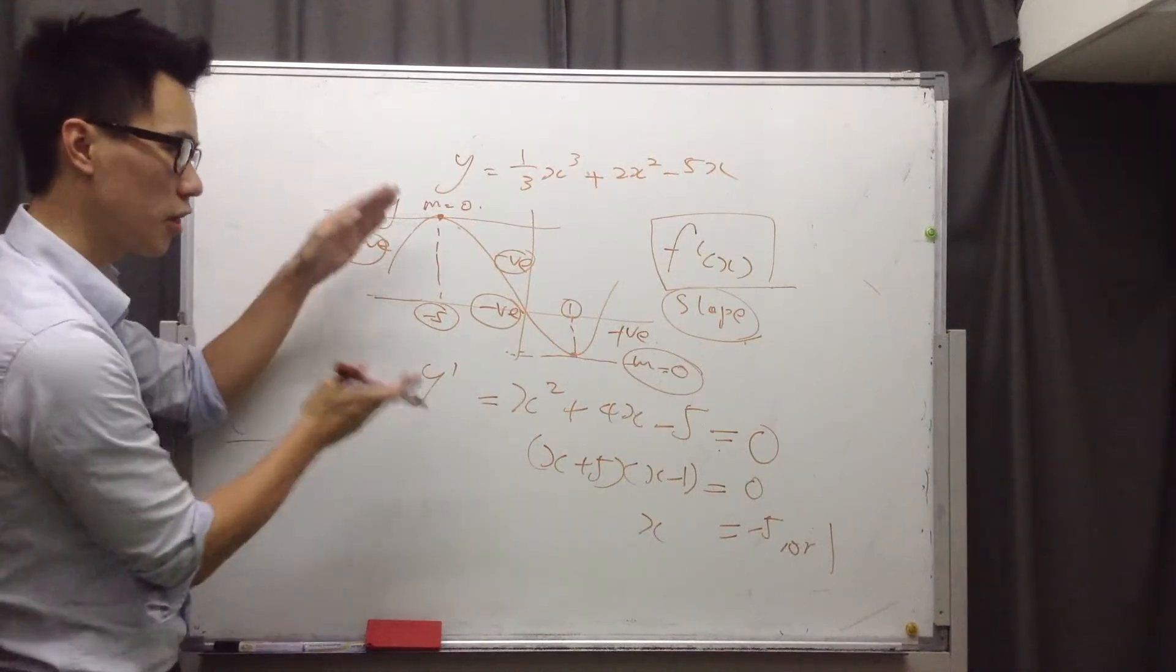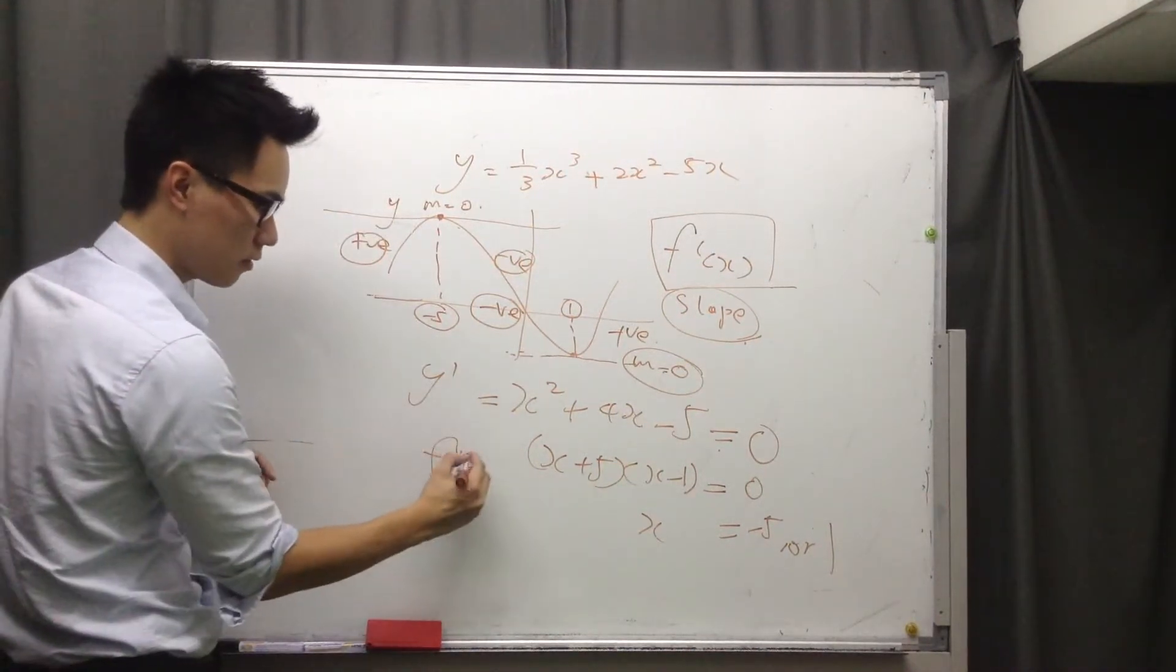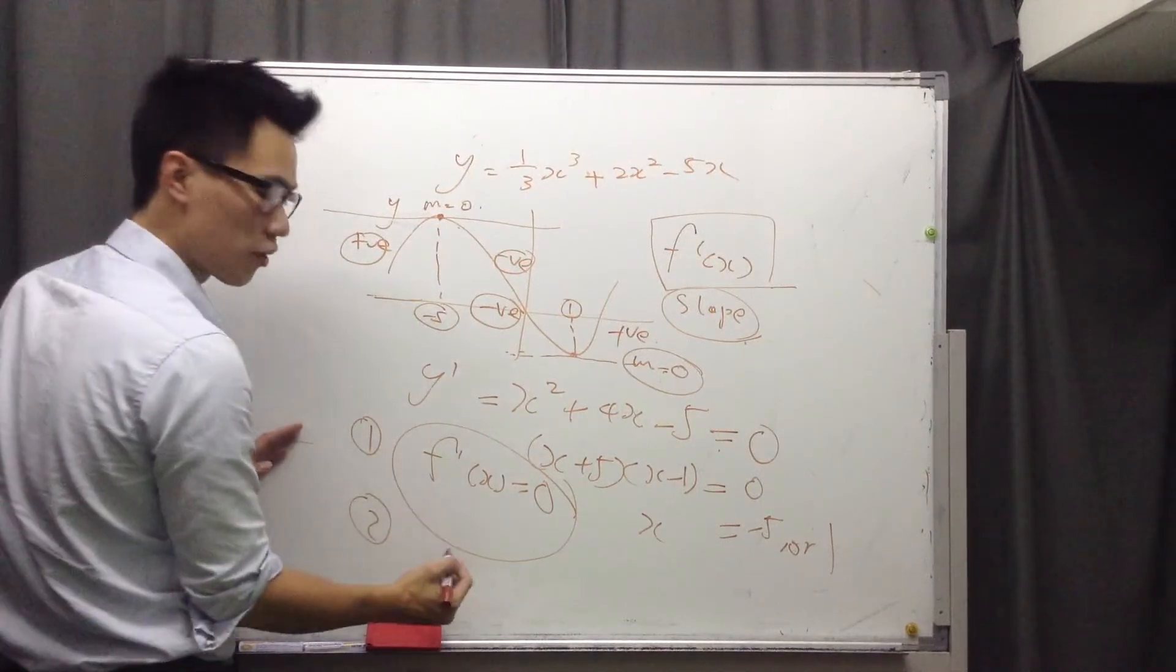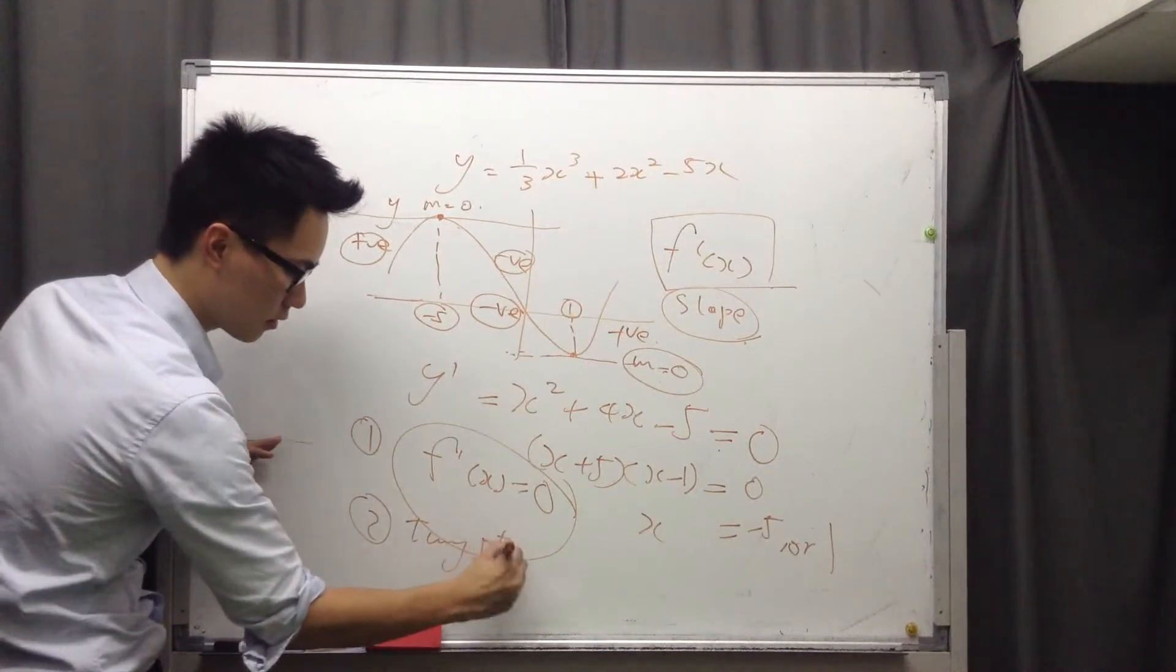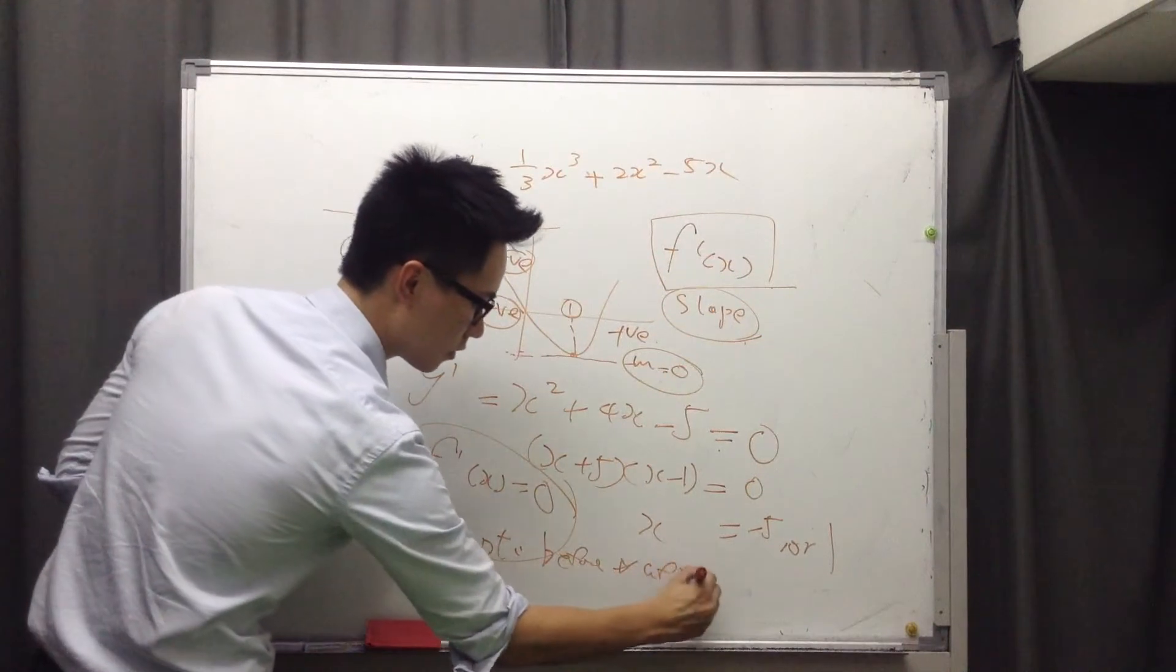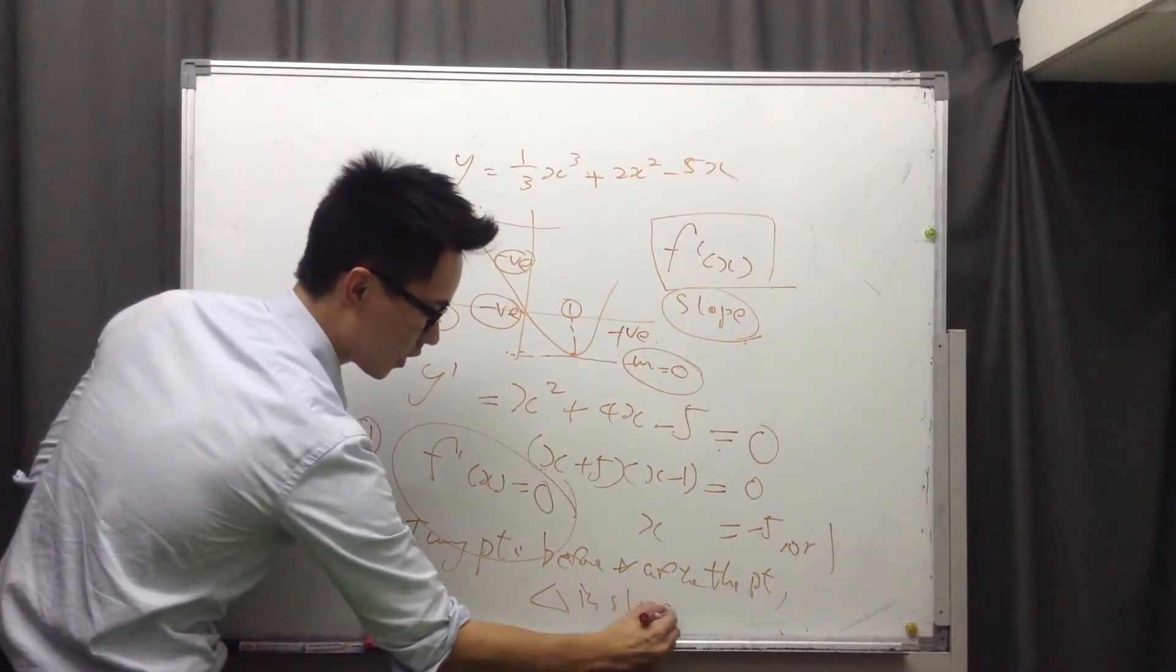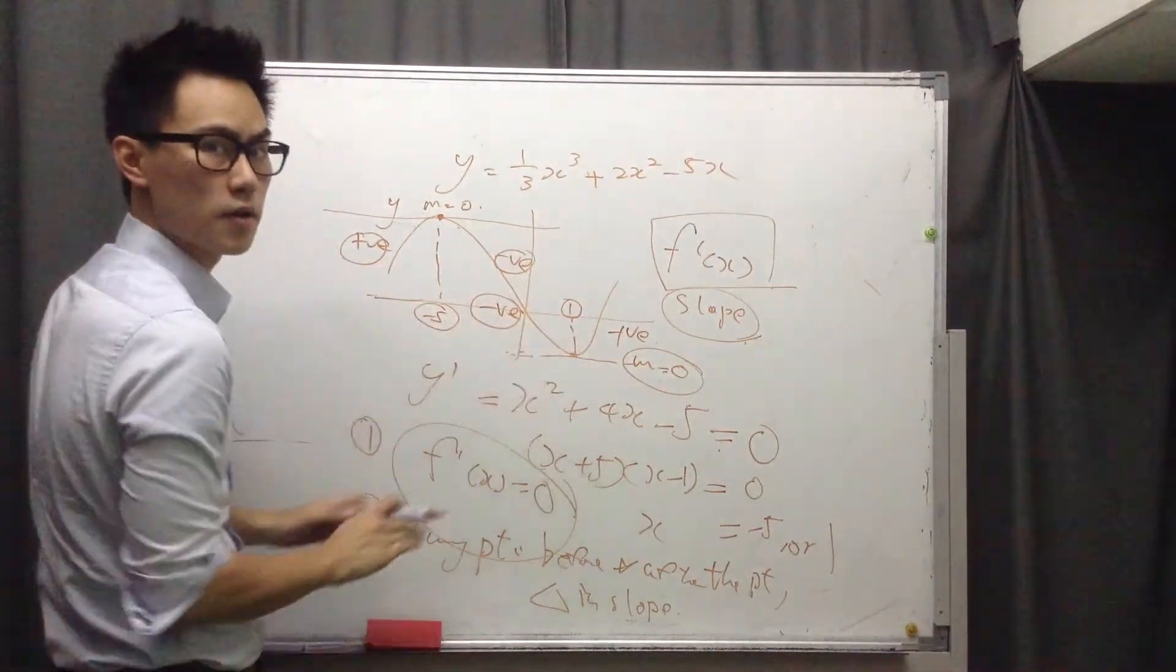So to find out the turning points, all you need to know is slope equals zero. And the second thing you need to know is, what is turning point? Turning point means before and after the point, there's a change in slope. Either from positive to negative, or negative to positive.